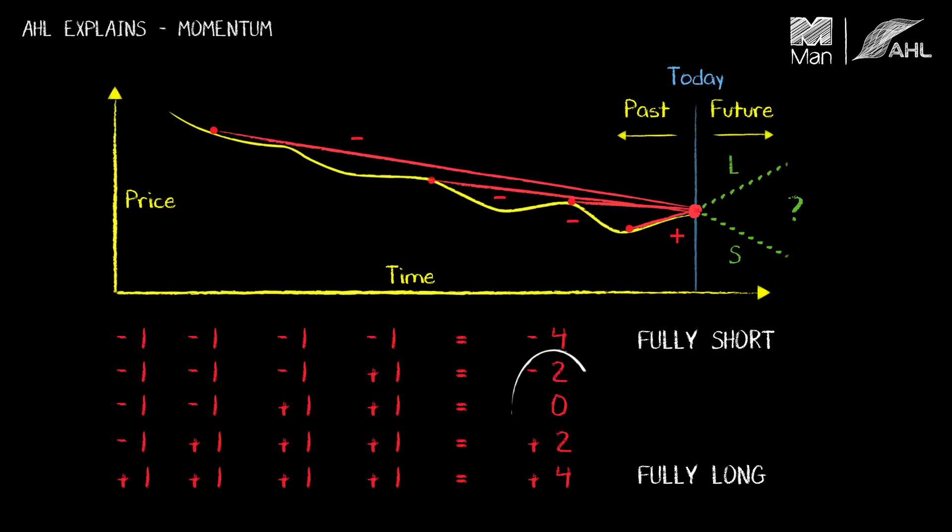These values plus two, zero, and minus two, there's less confirmation there between the different signals, so you would probably end up going partly long or half long for a signal of plus two. You'd go part short for a signal of minus two, and in this special situation where you've got an equal number of positives and negatives, these things cancel out and so you'd end up being flat, i.e. you'd hold no position in the market.